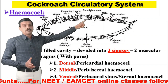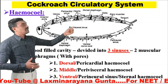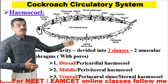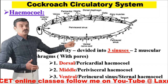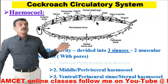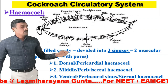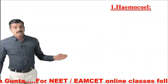The dorsal sinus is also called the pericardial hemocoel as it encloses the heart. The middle sinus is also called the perivisceral hemocoel as it encloses the visceral organs. The ventral sinus is also called the perineural sinus as it encloses the double ventral nerve cord. Being close to the sternal plates, it is also called the sternal hemocoel.